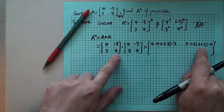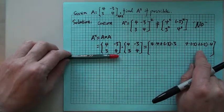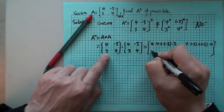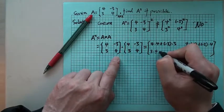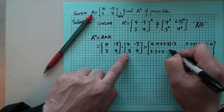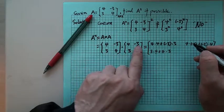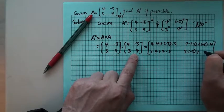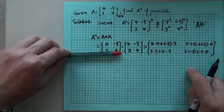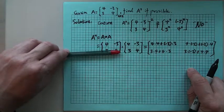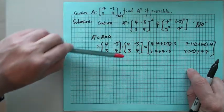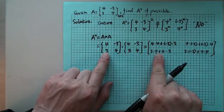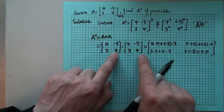Now the second row. Second row, you do the same thing. Second row is 3, 4, and then times the first column, so that will be 3 times 4 plus 4 times 3. And then 3 times negative 3 plus 4 times 4. So the second row times the first column and the second row times the second column are placed here.